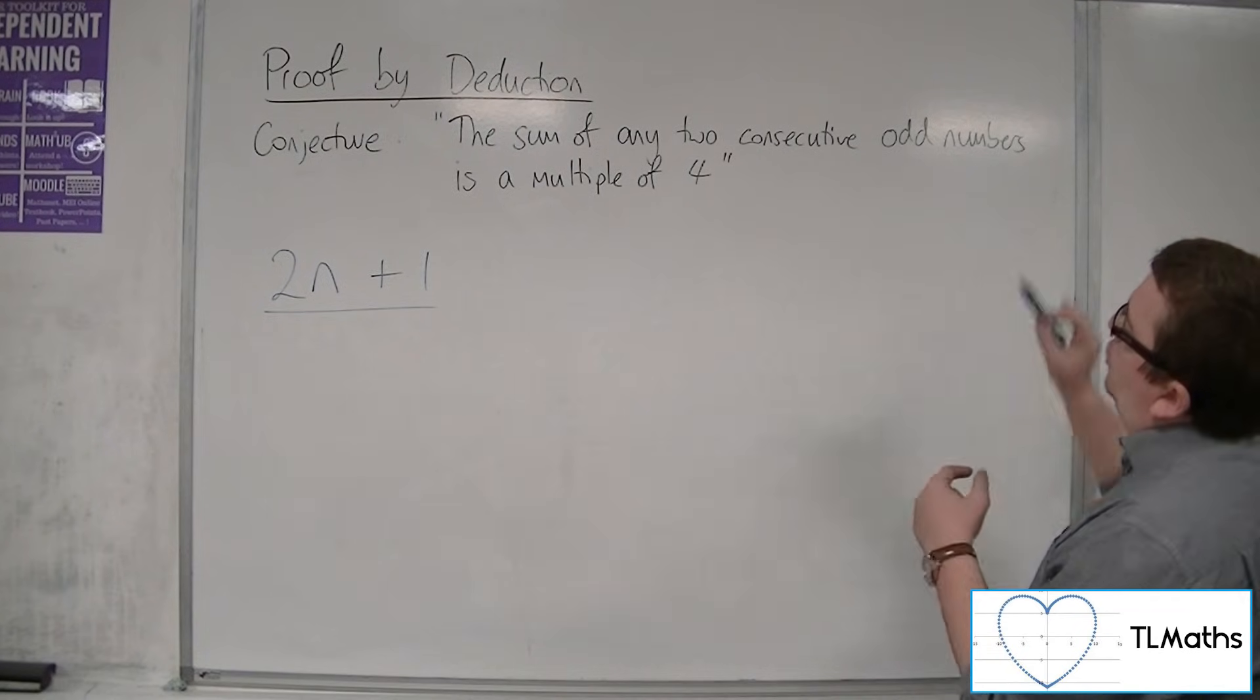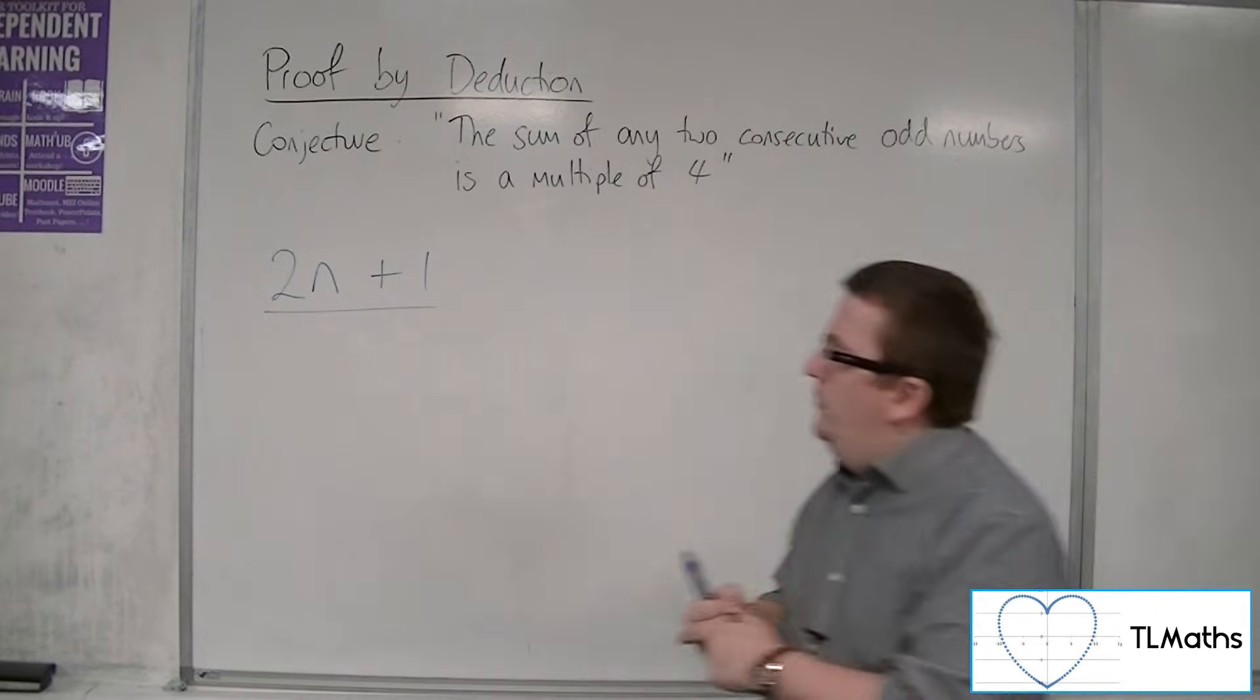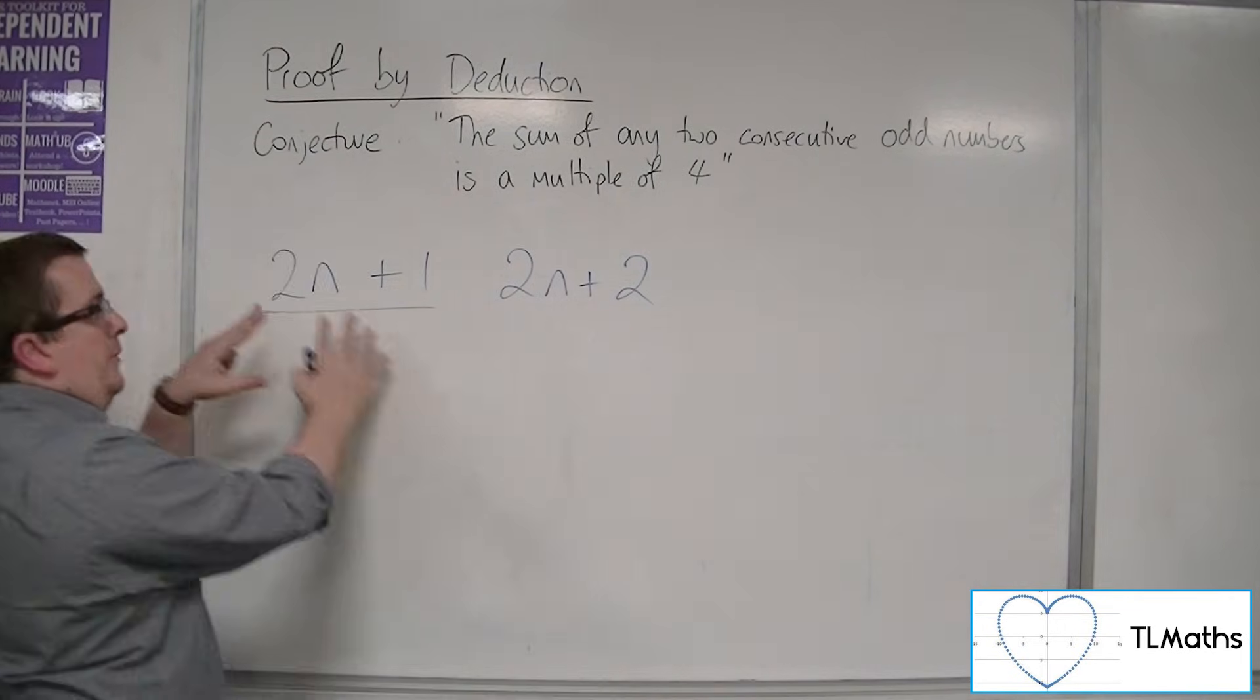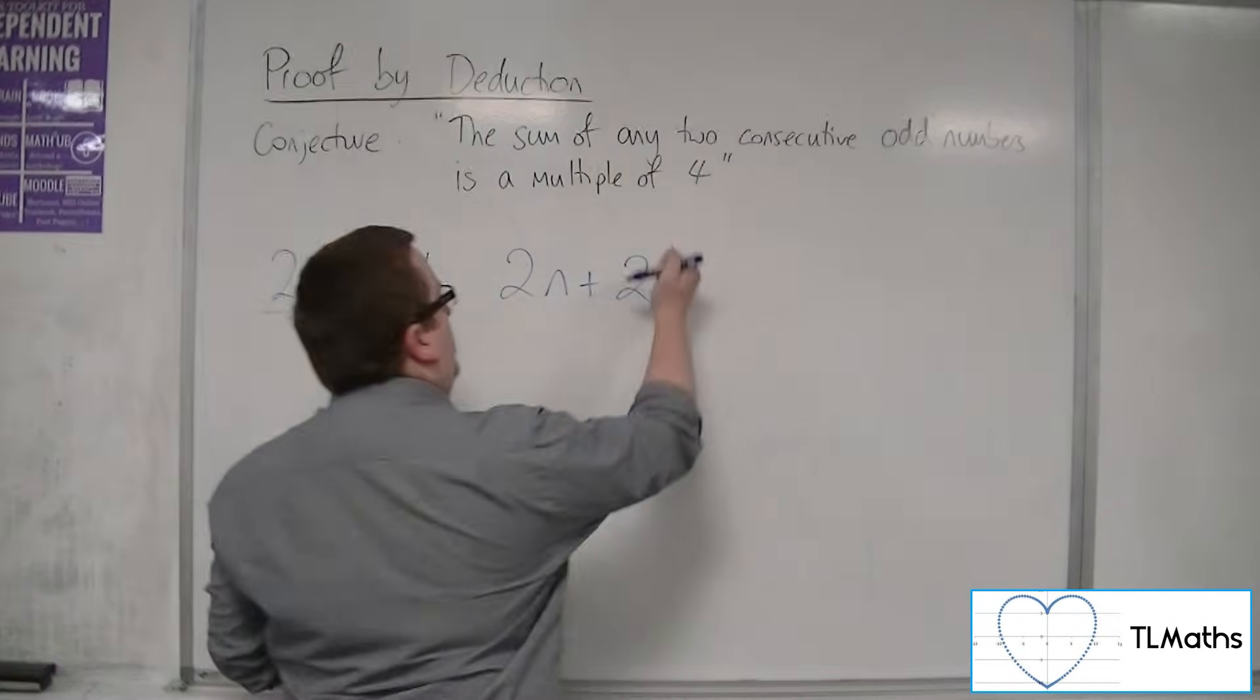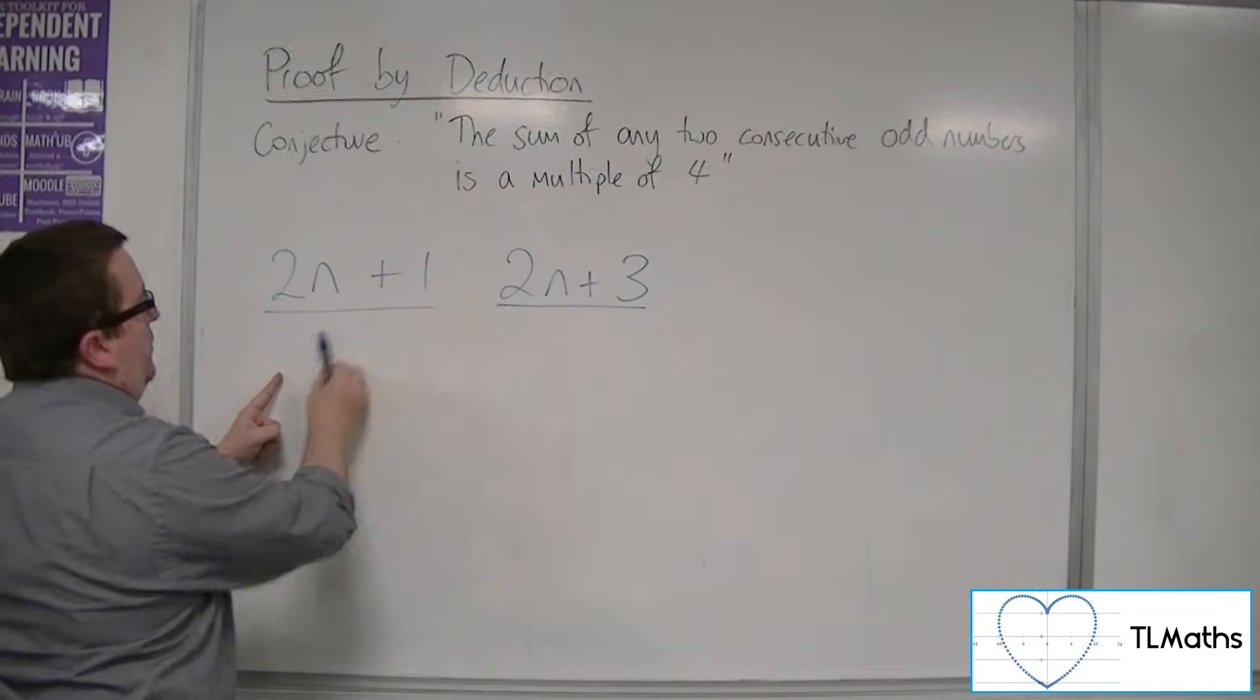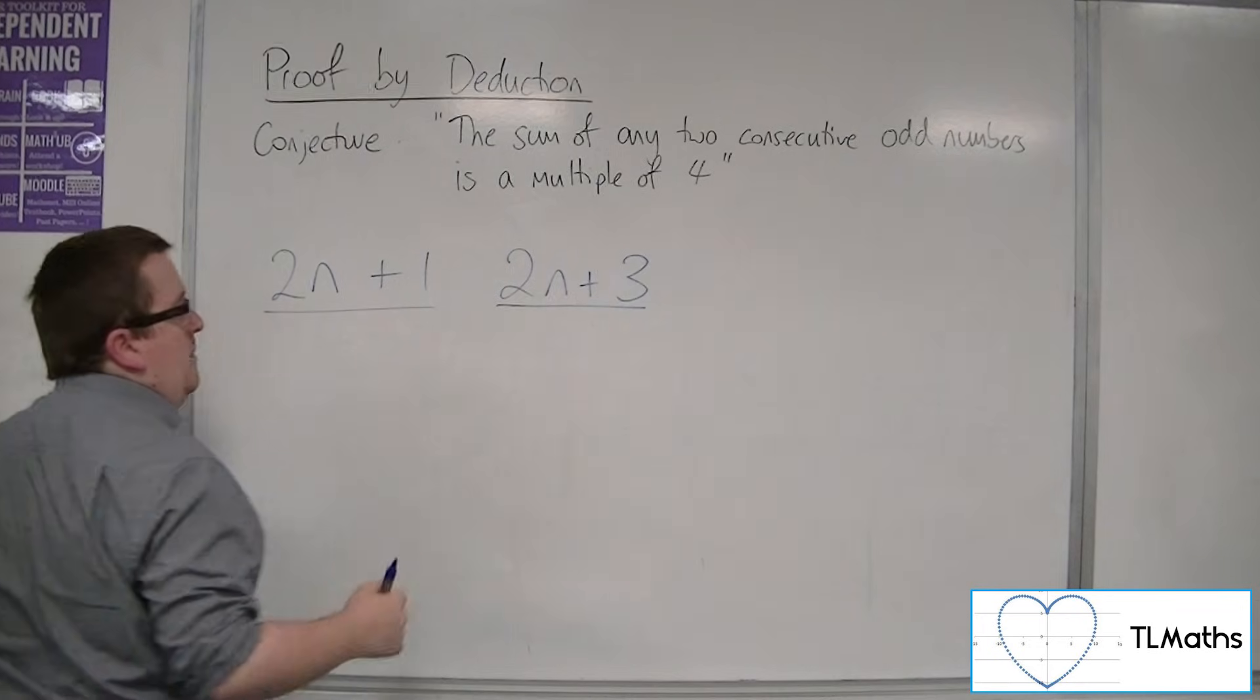Now, if I'm looking for the consecutive odd number, the next one along, I've got to think about what that number is. If I add 1 to it, and that was odd, then the next one must be even because I'm just going along the number line. So if I add another 1 to it, I will arrive at the next odd number. You could think of this as being 3 when n is 1, and this one being 5 when n is 1. This is the next odd number along.